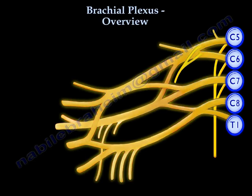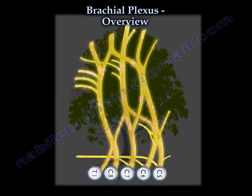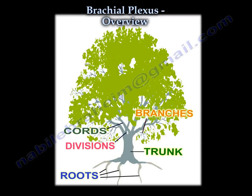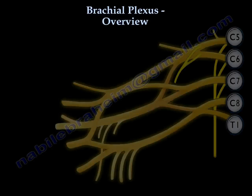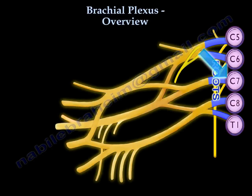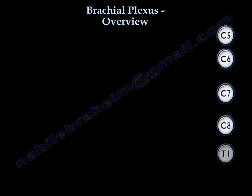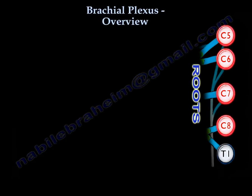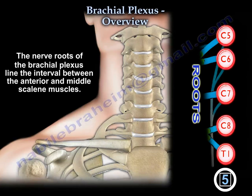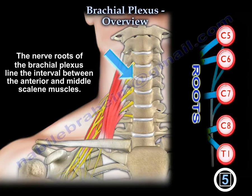The brachial plexus is like a tree that has roots, trunks, and divisions. Starting with the basics: there are five roots, from C5 to T1 — C5, C6, C7, C8, and T1. The roots line the interval between the scalenus anterior and scalenus medius.